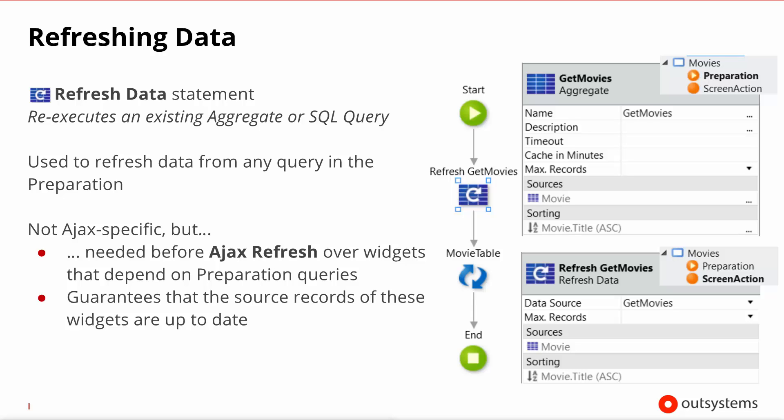As you can see on the right-hand side of the slide, we have the properties of the get movies aggregate that is being run in the preparation, and we have the screen action that is calling the refresh get movies, thus re-running the get movies query in the screen action, followed by the Ajax refresh of the movie table widget, which will send back the whole table to the user.